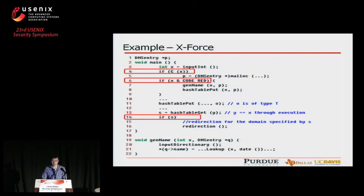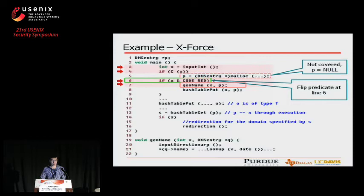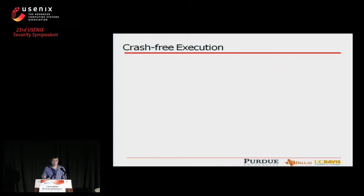Notice that based on the execution trace, line 5 is not covered, so P, which is a global pointer, is still a non-pointer. When we continue executing the program at line 21, a memory write exception occurs due to dereferencing an invalid pointer, which is q->name. Now we introduce one of the most important components in X-Force: crash-free execution.